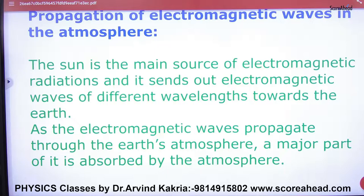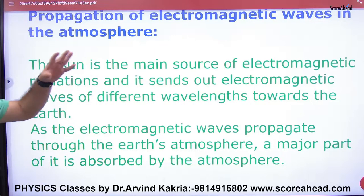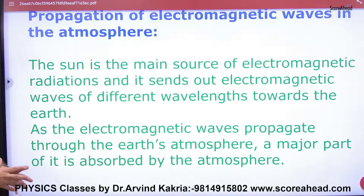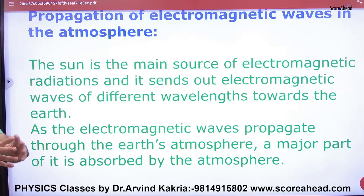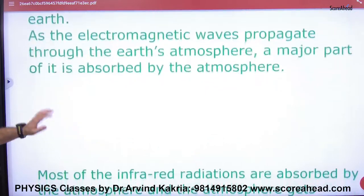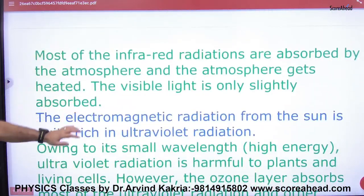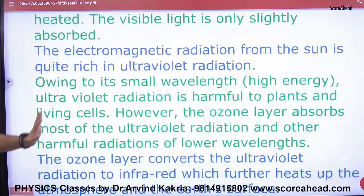In the atmosphere, the sun is the main source of EM waves. And in the sun, there are many EM waves — ultraviolet, infrared, and visible light. The sun is the source of the infrared and ultraviolet, as mentioned here.